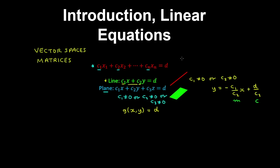And this linear equation is called homogeneous when d is equal to zero on the right-hand side.